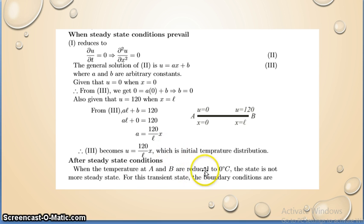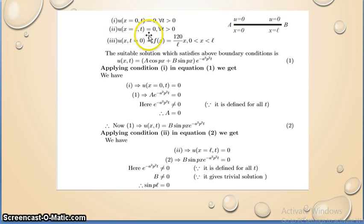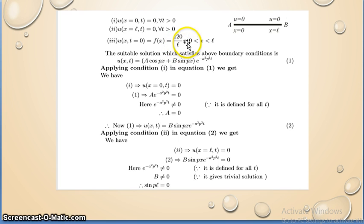After the steady state, the temperature at B is reduced to 0°C. Therefore the new boundary conditions are: (1) u(0,t) = 0, (2) u(L,t) = 0, and (3) u(x,0) = f(x) = 120x/L. These are the conditions for finding the transient solution.